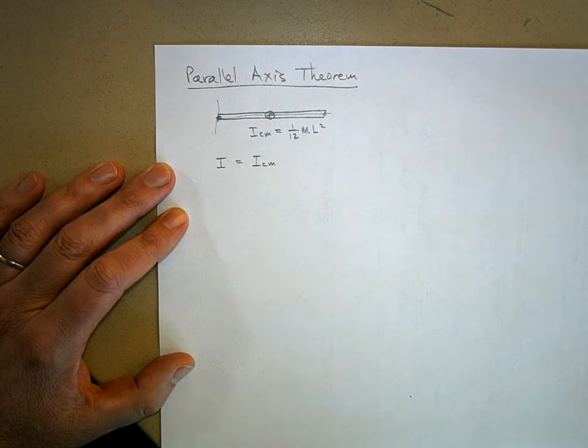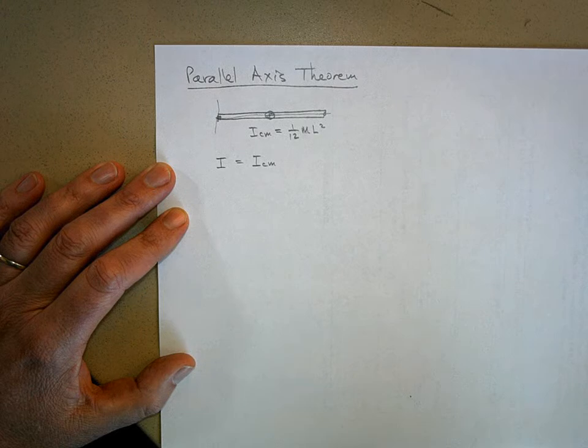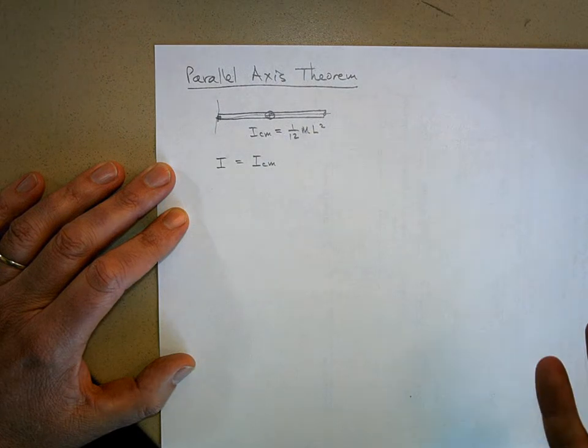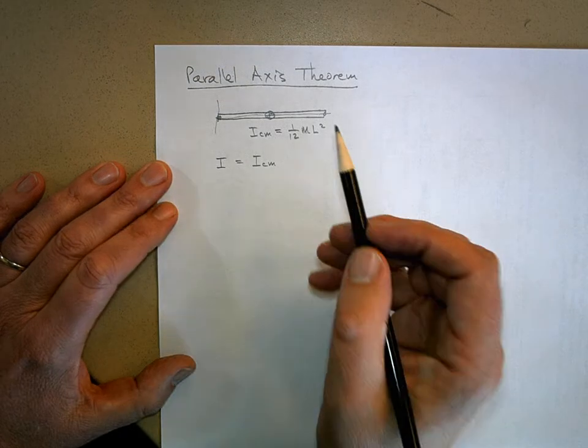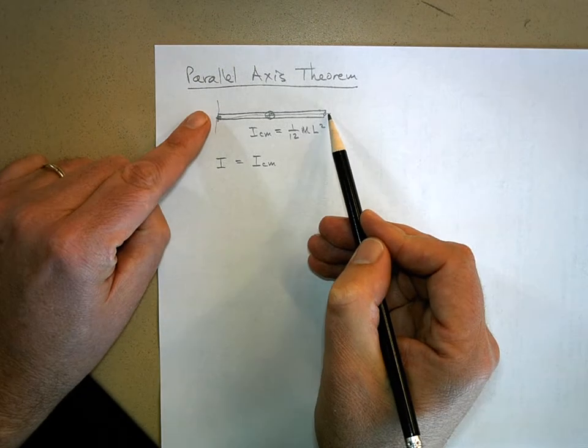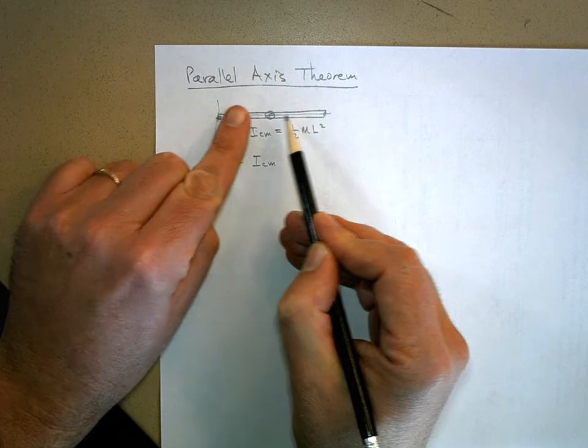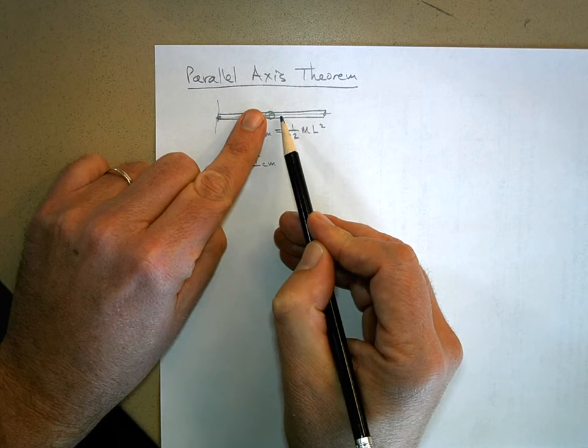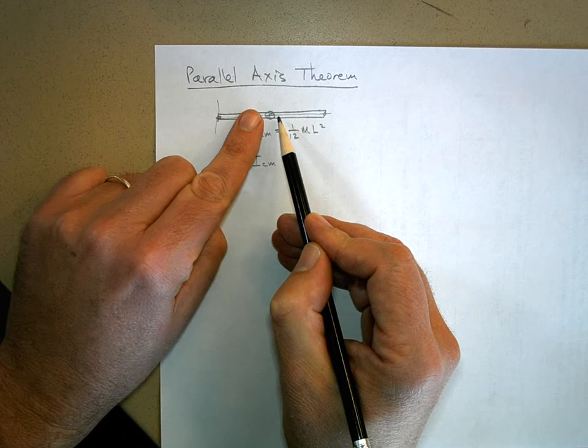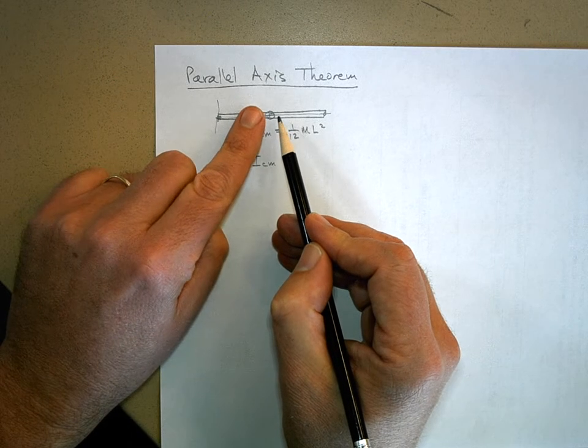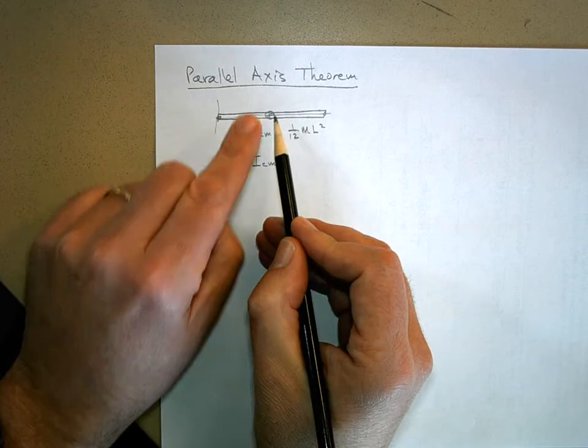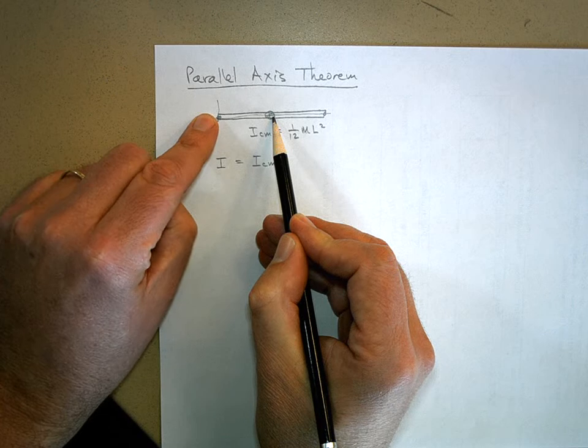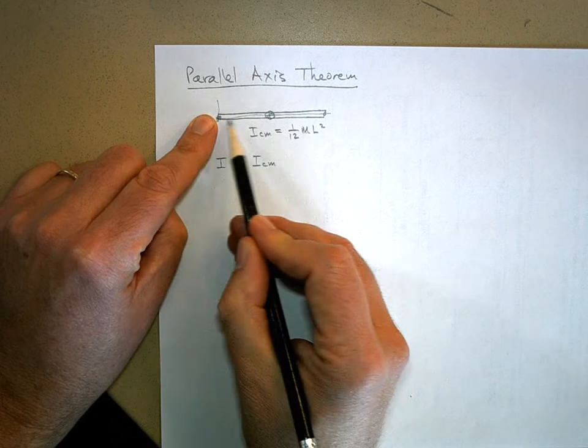Now we're going to add to it, right? We're going to increase the rotational inertia because we're going to have a lot more mass far away from the axis of rotation. Well, here's how it works: it's as if you take this stick, you turn it into a particle, and then it's right there, and then we move the axis of rotation over here.